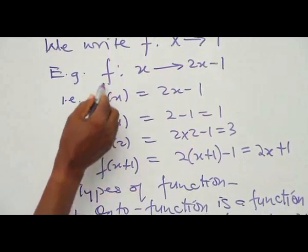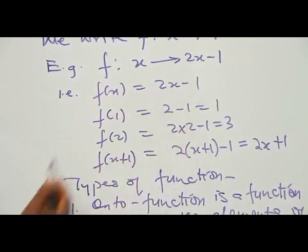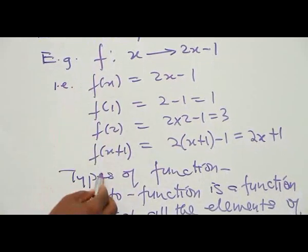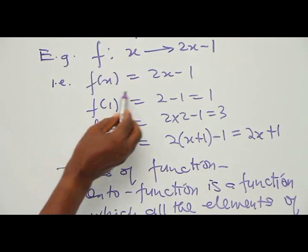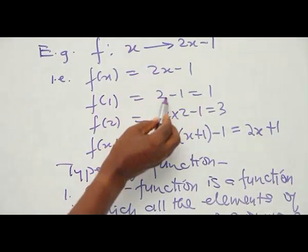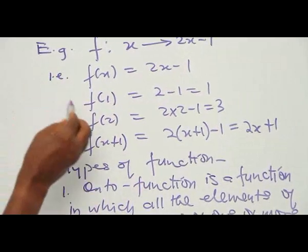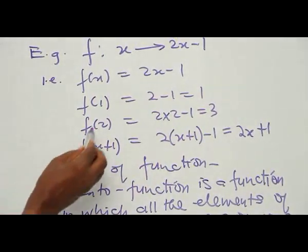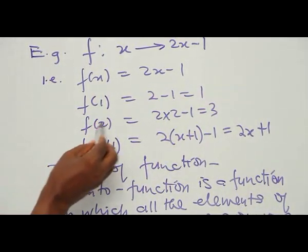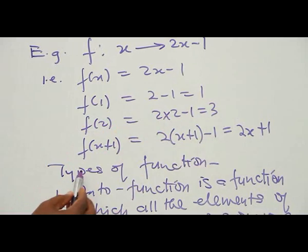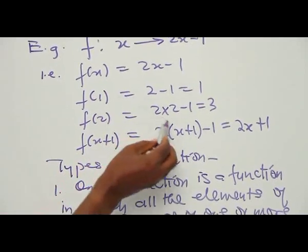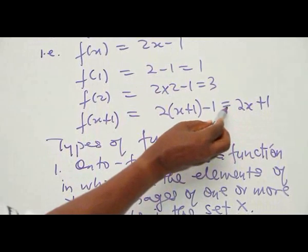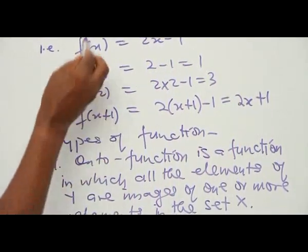So F(S) = 2S − 1. If you take element S = 1 from the domain and perform the operation, it gives you 1. Take S = 2, you get 3. Take S + 1, you get 2S + 1. The domain elements produce corresponding elements in the co-domain — these are the images.